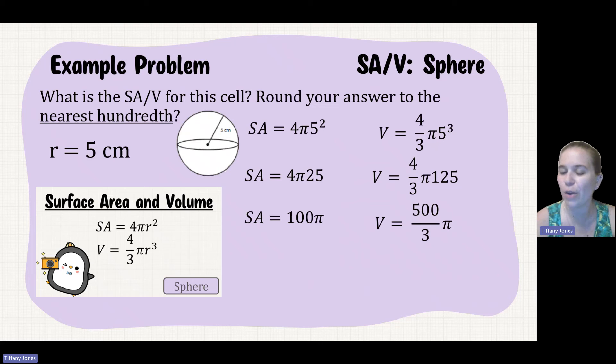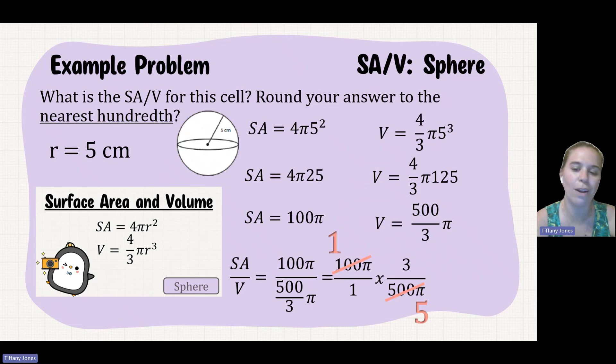Then we'll do our surface area over volume. So 100π over 500/3π. Go ahead and write the reciprocal. So then if we want to reduce this, that'll be 1 and 5. So 1 times 3 is 3, and 1 times 5 is 5. So that will give me 3/5. So that reduces down to 0.60. And it does say the nearest hundredth place, so you do want to have two decimal places there.